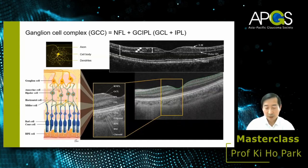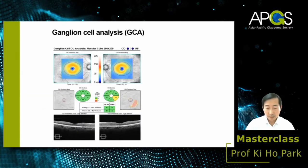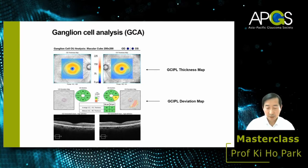When we look at the inner retina of the macular area, the cell body of the retinal ganglion cell is located in the ganglion cell layer, dendrites are in the inner plexiform layer, and axons are in the nerve fiber layer. The retinal ganglion cell complex comprises these three layers. In Cirrus OCT, the GCIPL thickness map in healthy eyes shows a donut-shaped symmetrical appearance. If there is a glaucomatous defect in the ganglion cell layer and inner plexiform layer, this symmetrical pattern is broken and the deviation map from the normative database shows defects.